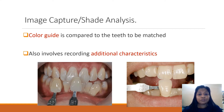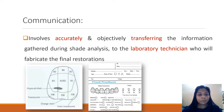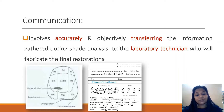The next step is image capture or shade analysis. A color guide is compared to the teeth being matched. It also involves recording additional characteristics such as any hypercalcifications, translucencies, surface textures, etc. Communication then involves a communication platform in which we denote all values to be communicated to the laboratory technician, transferring the information from the shade analysis.